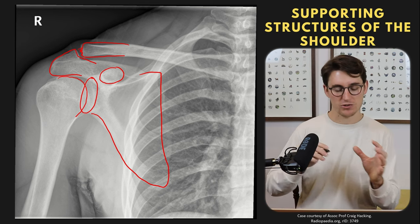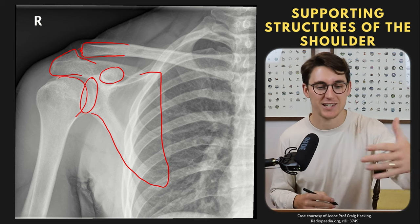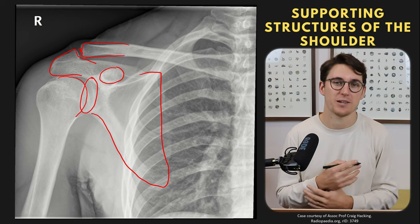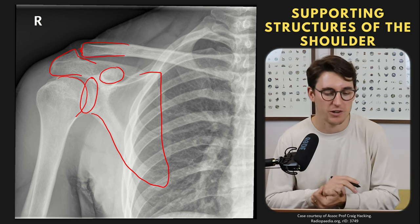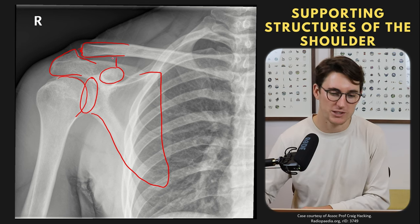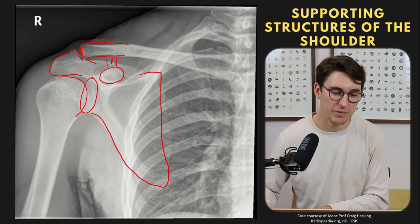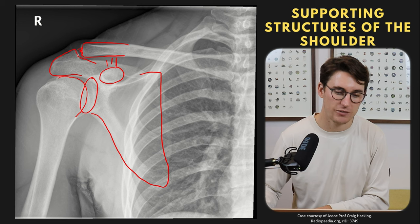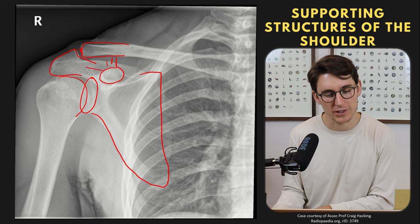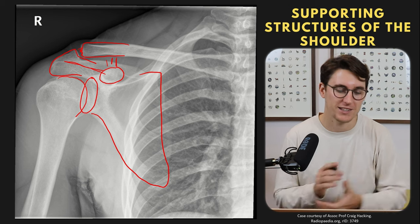The most important thing to remember is that the coracoid process comes out anteriorly and the acromion is posteriorly — on MRI we use those landmarks to figure out orientation. Looking at the ligaments: we have our coracoclavicular ligaments attaching the coracoid to the distal clavicle, our acromioclavicular joint, and a really important coracoacromial ligament that makes the roof of our coracoacromial arch, which we'll cover later in MRIs.